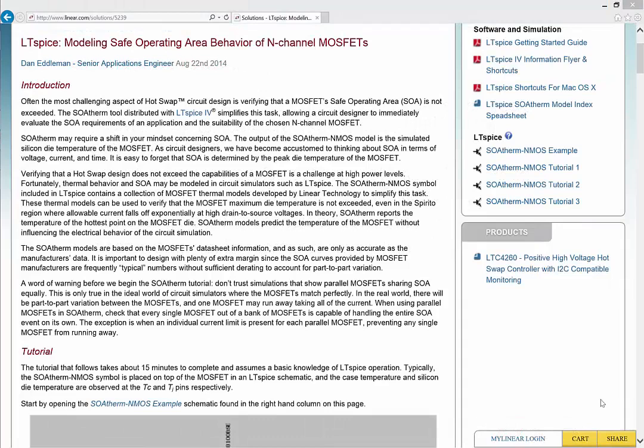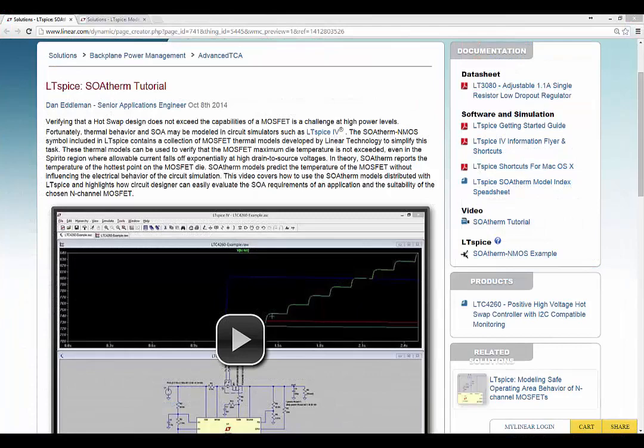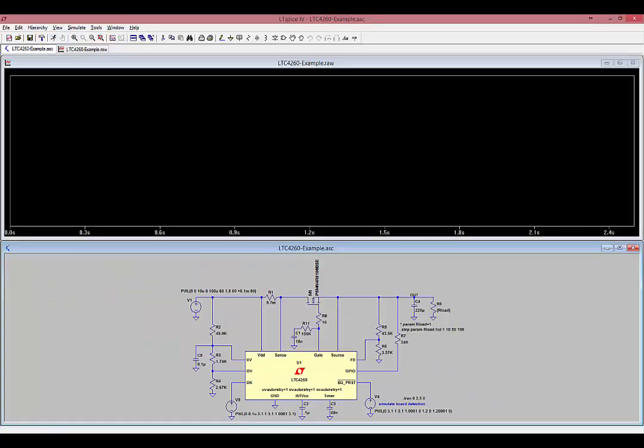In this tutorial, I'll walk through a few examples that demonstrate the SOATherm tool. These same steps are outlined in the online article titled, LTSpice, Modeling Safe Operating Area Behavior of N-Channel MOSFETs. Let's start by opening an example hot swap circuit. There should be a link at the right side of this webpage to the circuit SOATherm N-MOS example. Click on this link to open the file in LTSpice. You should see a circuit that contains the LTC4260 hot swap controller driving a PSMN 4R8 100 BSE MOSFET from NXP. Run this simulation.